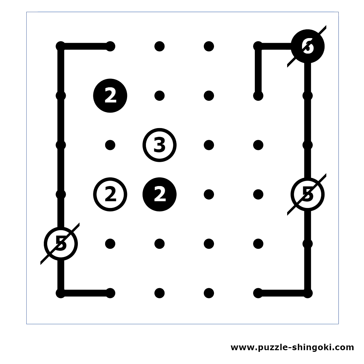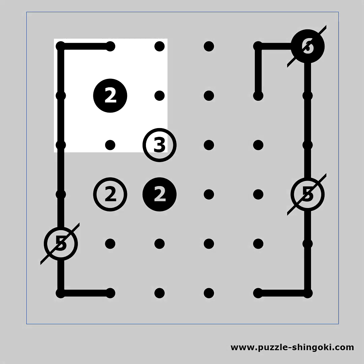The line that we draw acts like a border for other clues. Let's take a look at this 2. We cannot have a line on the left as it will create a branch. We can mark that with an X. The loop must make a turn in the black circle and now there are only two ways to do that.